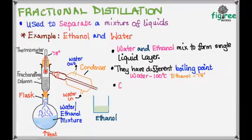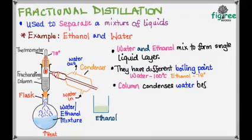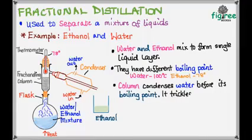That is, water boils at 100 and ethanol boils at 78. The purpose of the fractionating column is to condense water before its boiling point. What happens? It traps water before 100 degrees and lets ethanol proceed to the condenser.